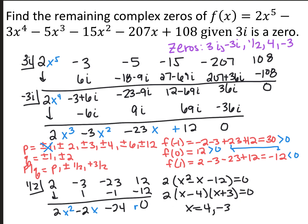I ended up with 2x squared minus 2x minus 24, so one zero is x equals 1 half. I factored out a 2, leaving x squared minus x minus 12, which factors into x minus 4 and x plus 3. So my last two zeros are positive 4 and negative 3. This was a degree 5 polynomial, so I needed five zeros: 3i, negative 3i, 1 half, 4, and negative 3.